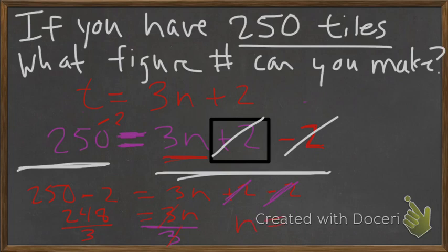n will equal something. We're actually left with a decimal answer. It's 82.6, which will round up to 82.7. But it won't make a difference, because we can't make 7 tenths of a figure. So, our answer is going to be figure 82 can be made.